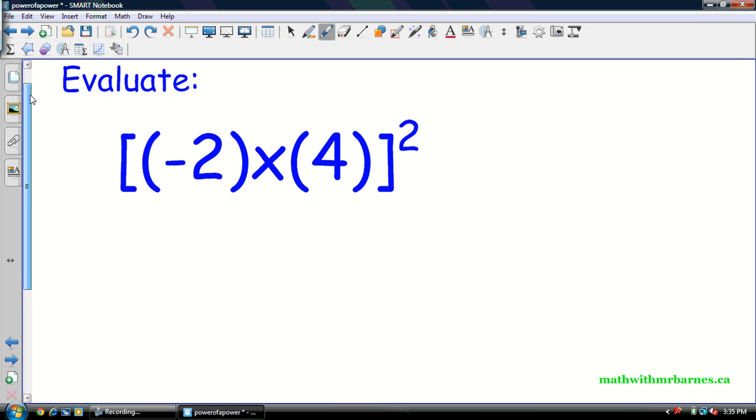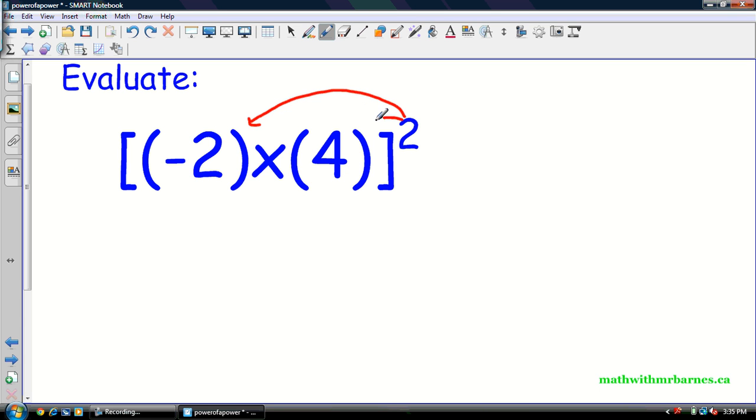All right, let's try this one. So again, instead of writing it out this time, we'll just distribute. So we go to here, to here. So we have negative 2 to the 2 times 4 to the 2. So that's 4. Negative 2 times negative 2 is 4. Times 4 times 4. 4 times 4 is 16. 4 times 16 is 64.